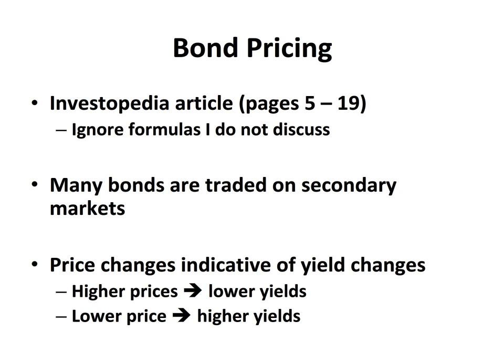Many bonds, treasuries in particular, but municipals and corporate bonds as well, are traded on the secondary markets. We're not creating a new instrument, we're just trading an existing bond between the current owner and finding another owner, a seller and purchaser. They come to the price of that bond in the secondary market. The prices of those bonds, as they change, indicate changes in yields. Higher prices mean lower yields and lower prices mean higher yields.